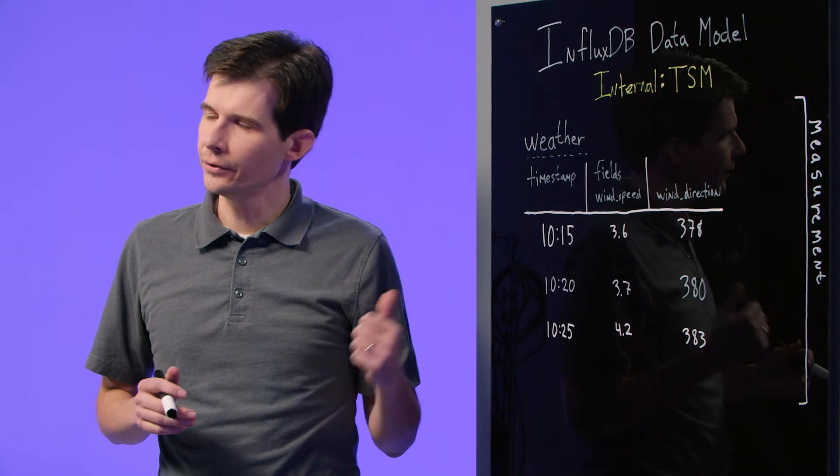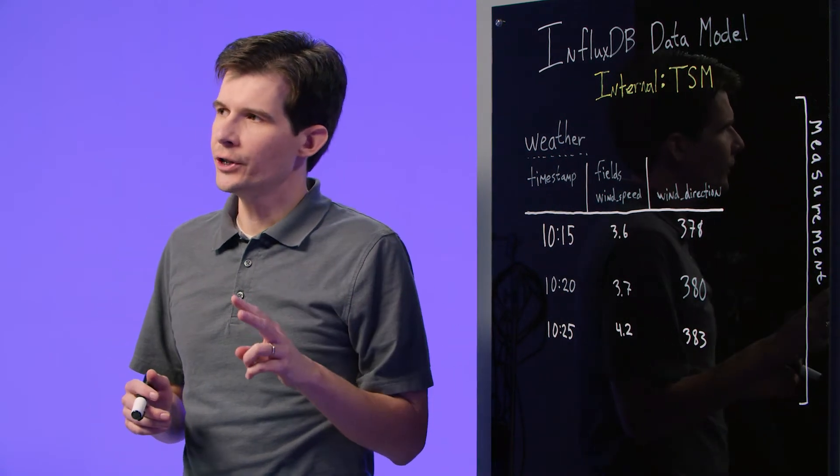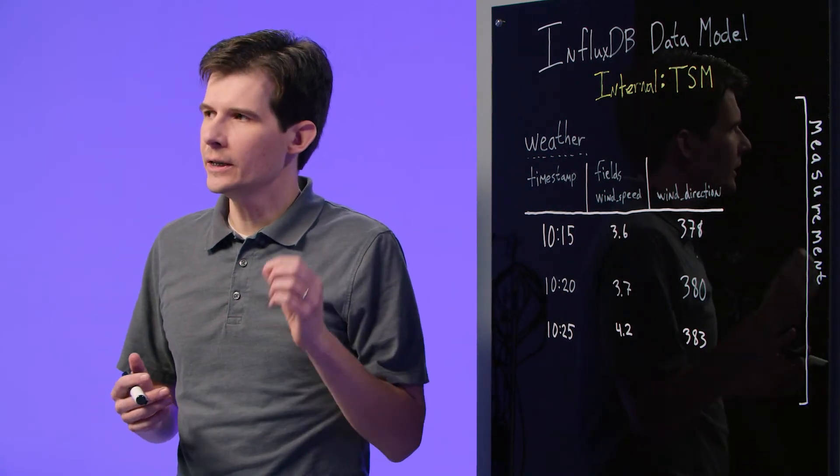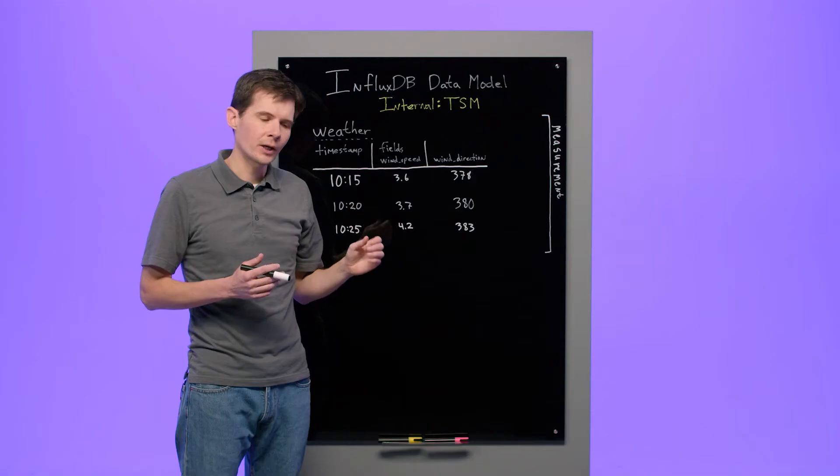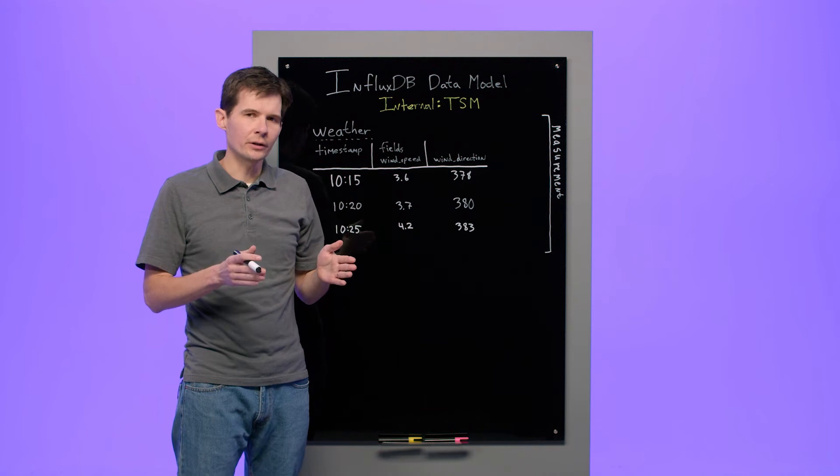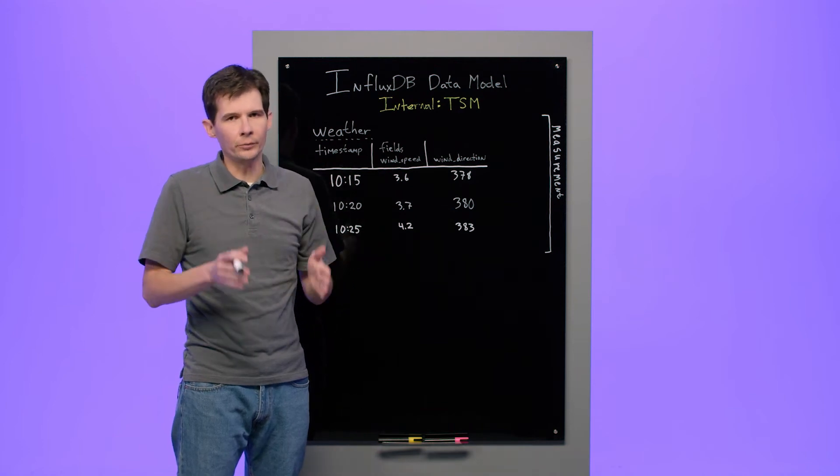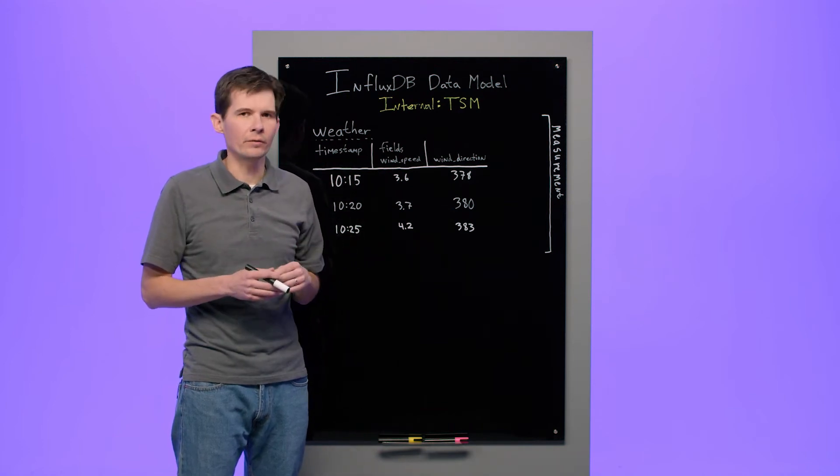TSM stores these data in two series. A TSM series is a single value varying with time. TSM will store these series on disk in columnar format. Let me demonstrate that for you.